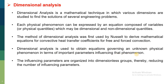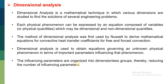Dimensional analysis is used to obtain the equations governing an unknown physical phenomenon in terms of important parameters influencing that phenomenon. If we come across a situation where we are unknown about the physical phenomenon, it is difficult to find the influencing parameters — so dimensional analysis is used to identify these influencing parameters. These influencing parameters are organized into dimensionless groups, also called dimensionless numbers, thereby reducing the number of influencing parameters.